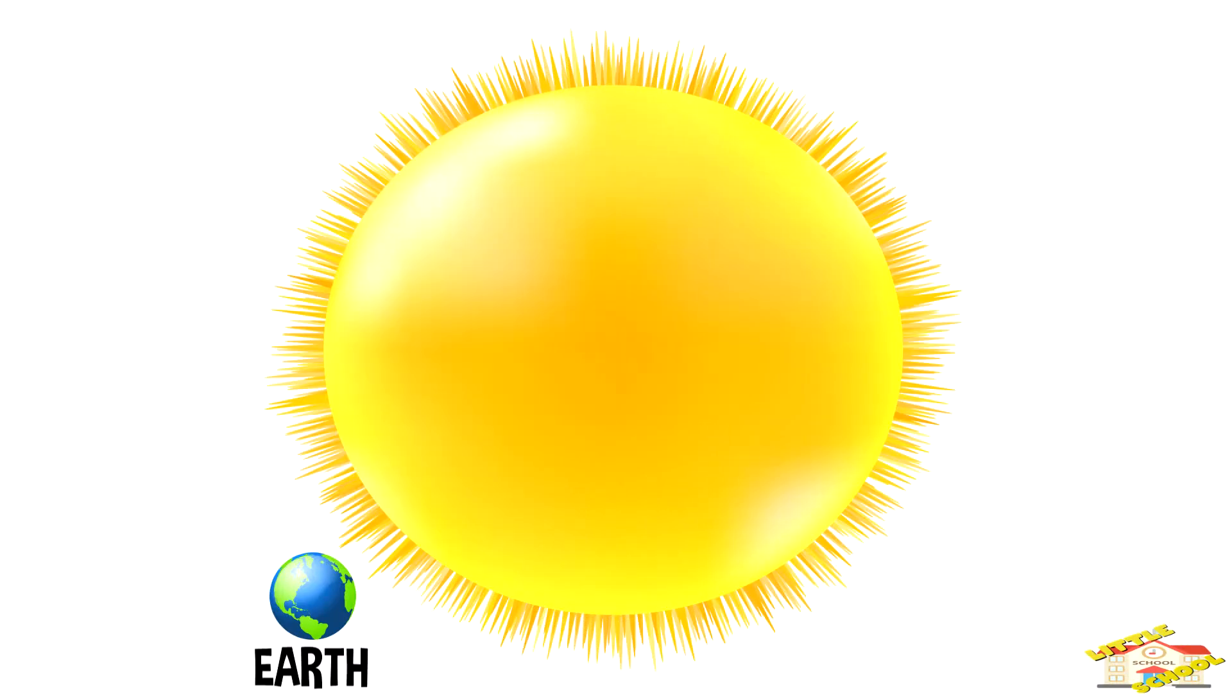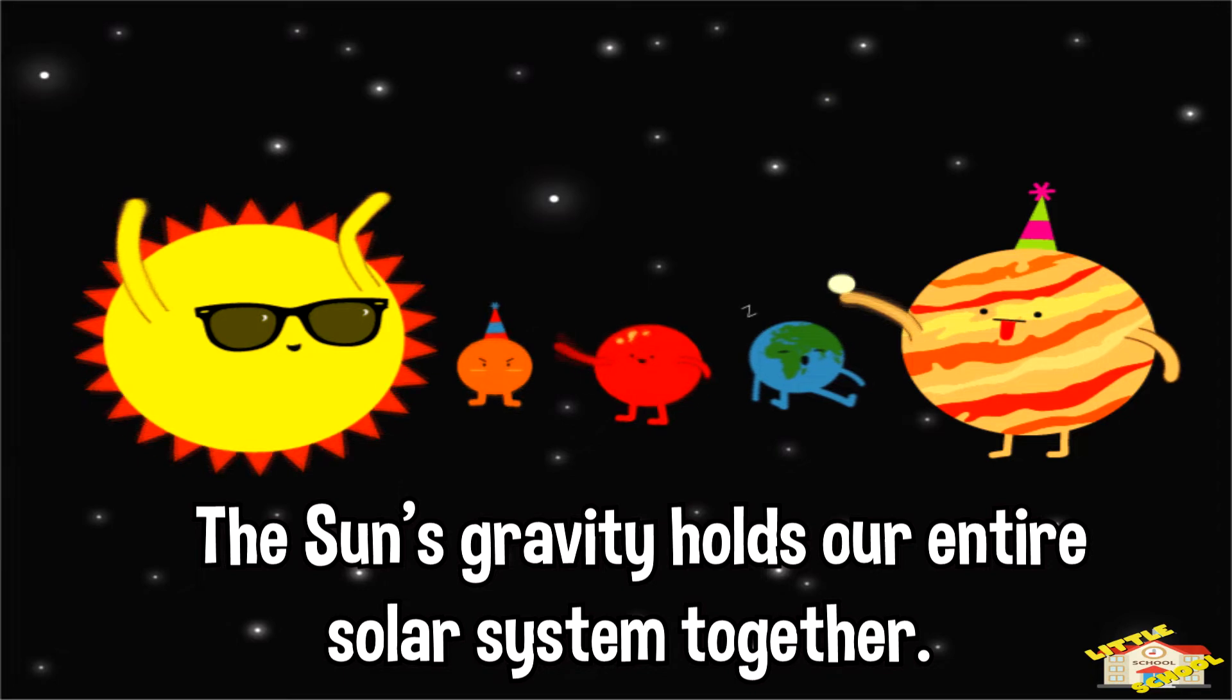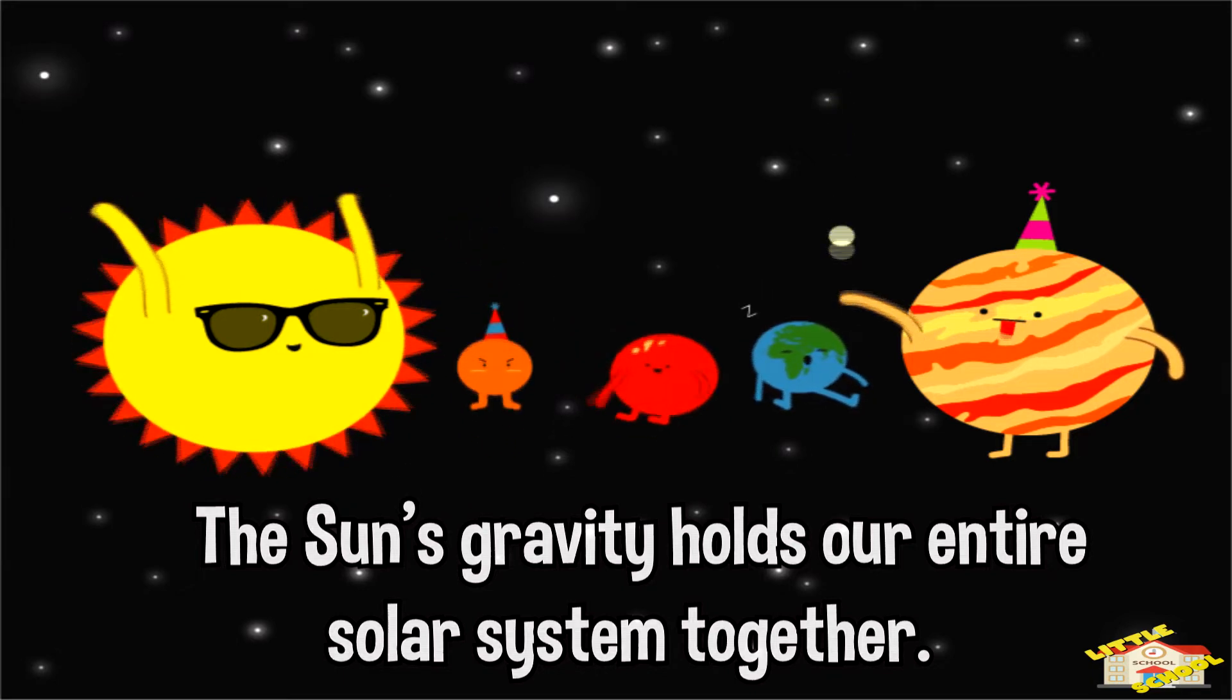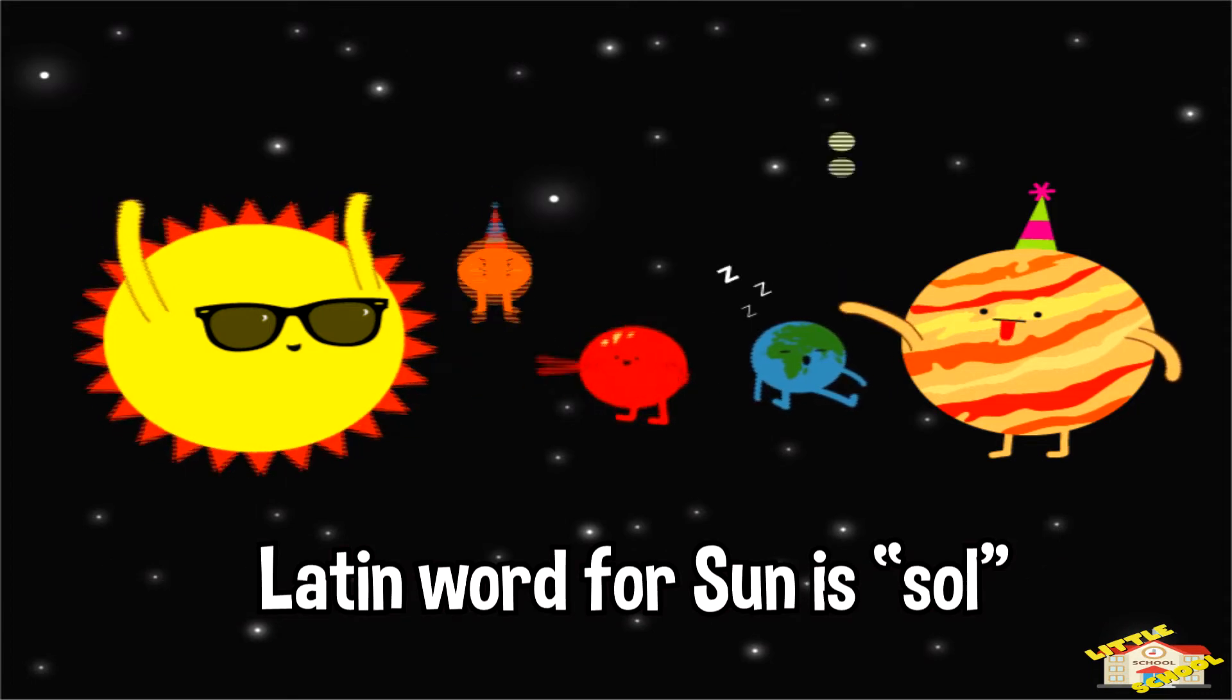Our Sun is about 100 times wider than Earth, but it is just an average size star. Astronomers have found some stars that are 100 times bigger than the Sun and others that are 10 times smaller. The Sun's gravity holds our entire solar system together. Our solar system is even named after the Sun. The Latin word for Sun is Sol.